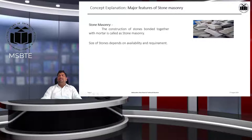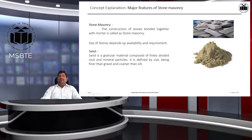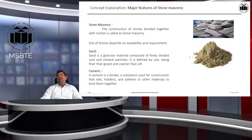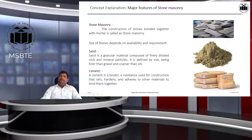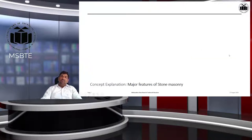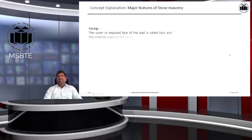The size of stones depends on the availability and requirement — the quality of rock available at the quarry site determines this. After stone, we require sand for bonding: a granular material composed of finely divided rock and mineral particles, finer than gravel and coarser than silt. As in brick masonry, cement is also used here. Together, sand and cement are used to prepare mortar, and with mortar, the bonding of stones takes place in stone masonry.